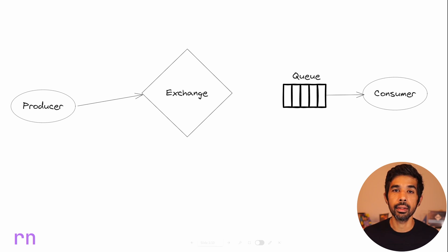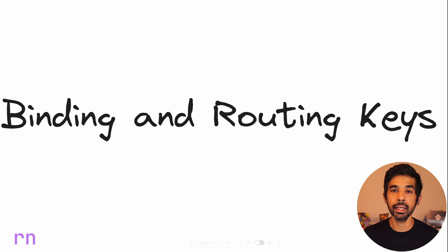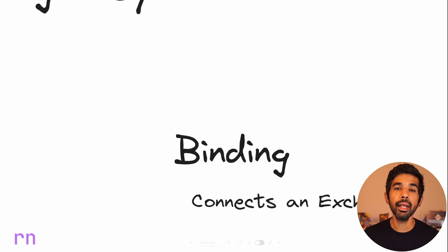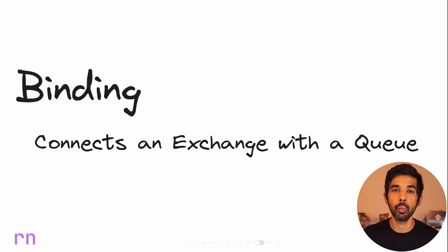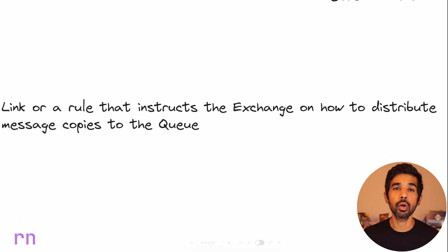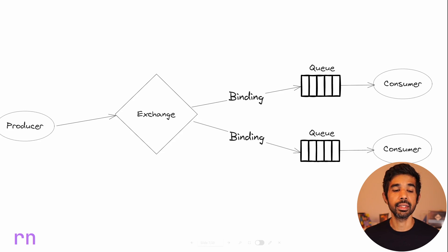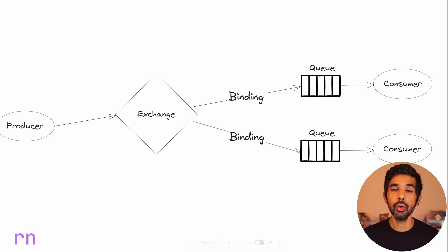With the exchange in between the producer and the consumer, we need to introduce two more concepts: binding and routing keys. A binding is what connects an exchange with a queue. You can think of this as a link or a rule that instructs the exchange on how to distribute message copies to the different queues. You can have one or more bindings on an exchange which point to the same queue or different queues.